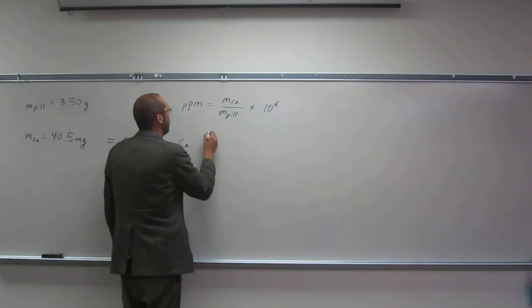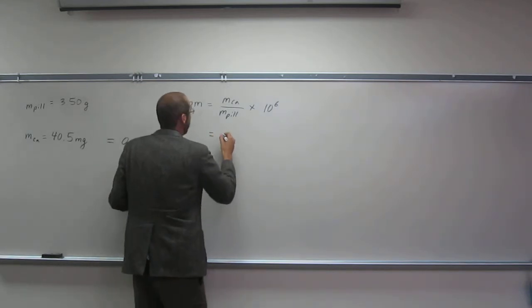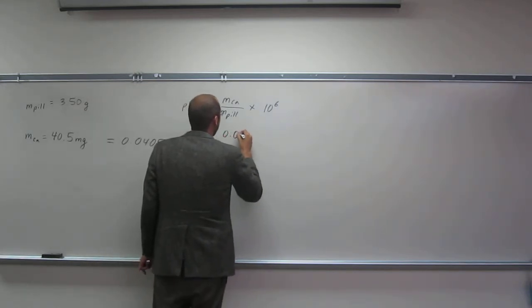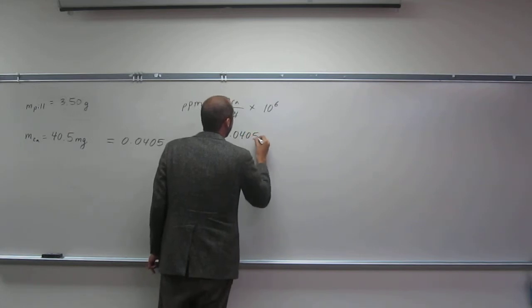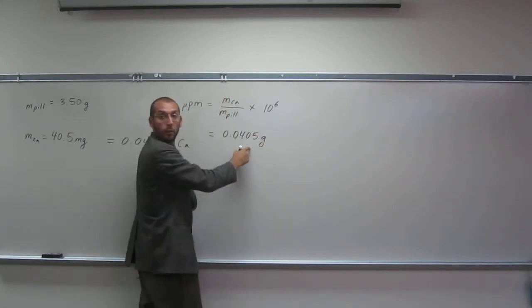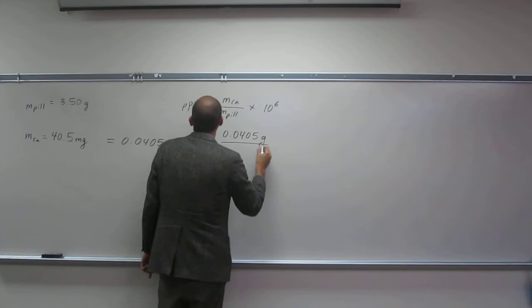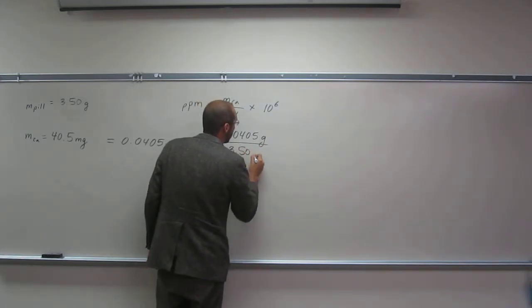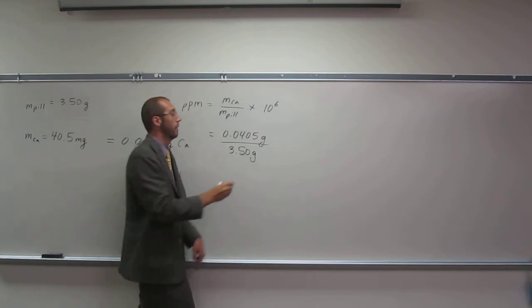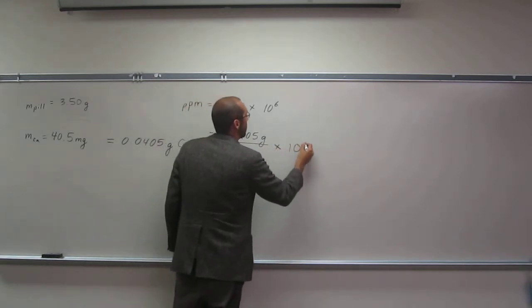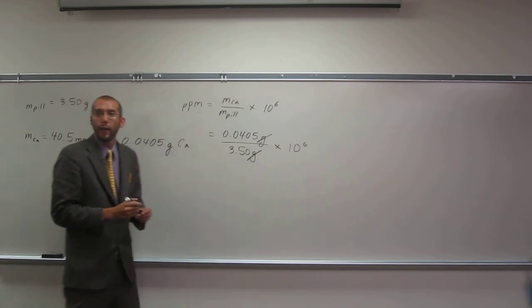Everybody okay with doing that? So what do I get? 0.0405 grams, make sure you keep your units there, divided by 3.50 grams, times 10 to the 6th. Cancel, cancel, like that.